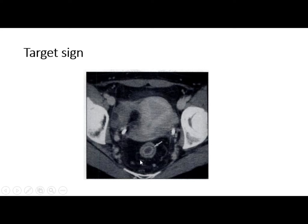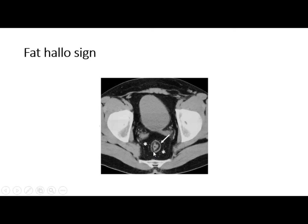The target sign shows mural stratification — visible layers giving the typical target appearance, which is why it is called the target sign. The fat halo sign appears because fat deposition within the submucosa produces a characteristic halo on CT. The surrounding perirectal fat is also increased.